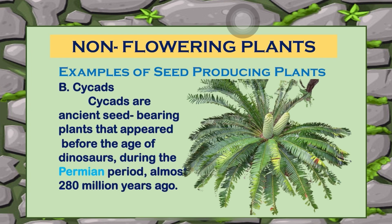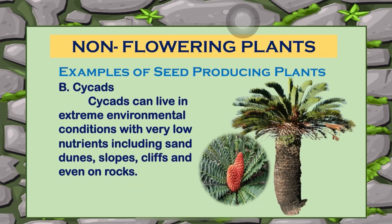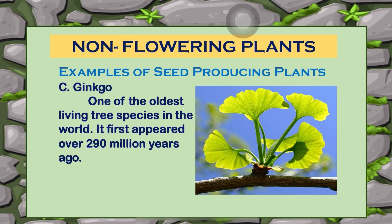The second example of seed-producing plants are cycads. Cycads are ancient seed-bearing plants that appeared before the age of dinosaurs, during the Permian period, almost 280 million years ago. Cycads can live in extreme environmental conditions with very low nutrients, including sand dunes, slopes, cliffs, and even on rocks.